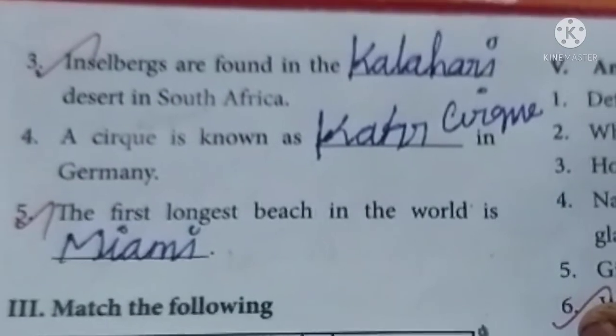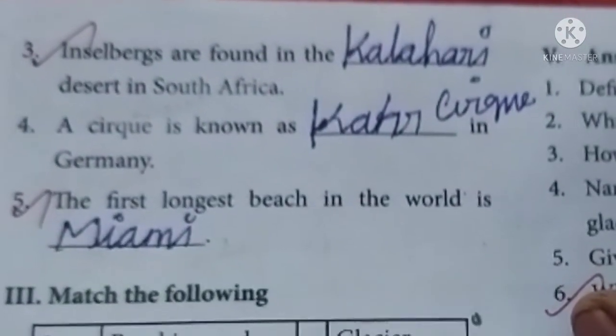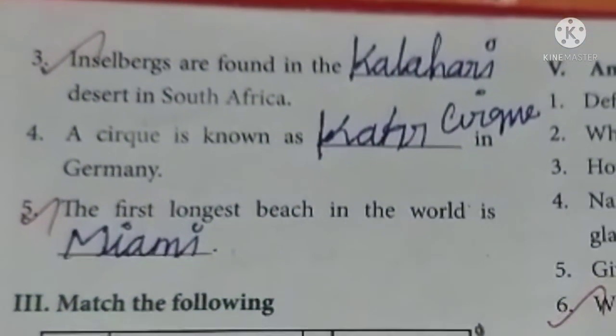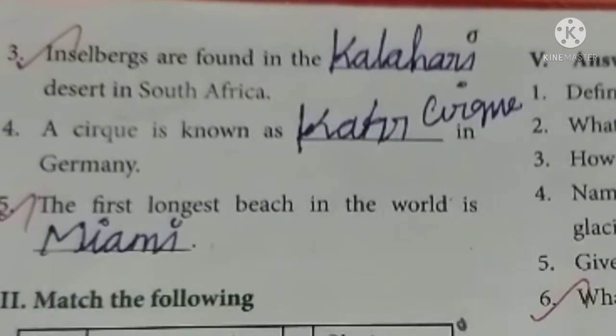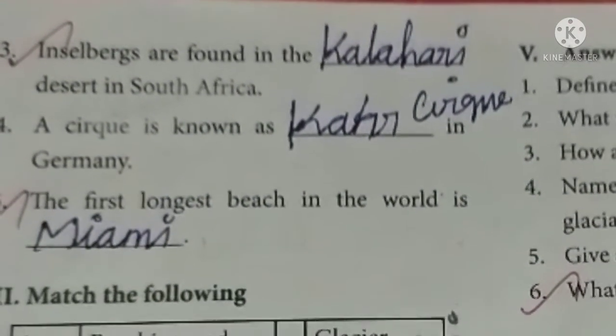Inselbergs are found in the dash desert in South Africa. Kalahari, K-A-L-A-H-A-R-I. Then fourth one.